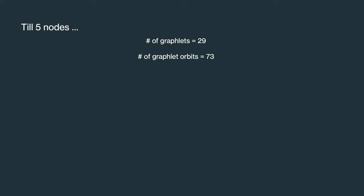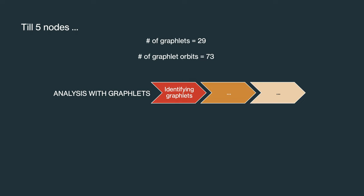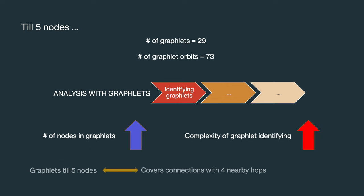Analysis with graphlets means going through a lot of steps. But the first one is identifying the graphlets from a network. Number of nodes in graphlet, if it is increased, then it also increases the complexity of the graphlet identifying algorithm. Beyond five, this complexity gets too big. Also, for most practical cases, the graphlet till five nodes serves the purpose, because it still covers the interactions till five nearby jumps.